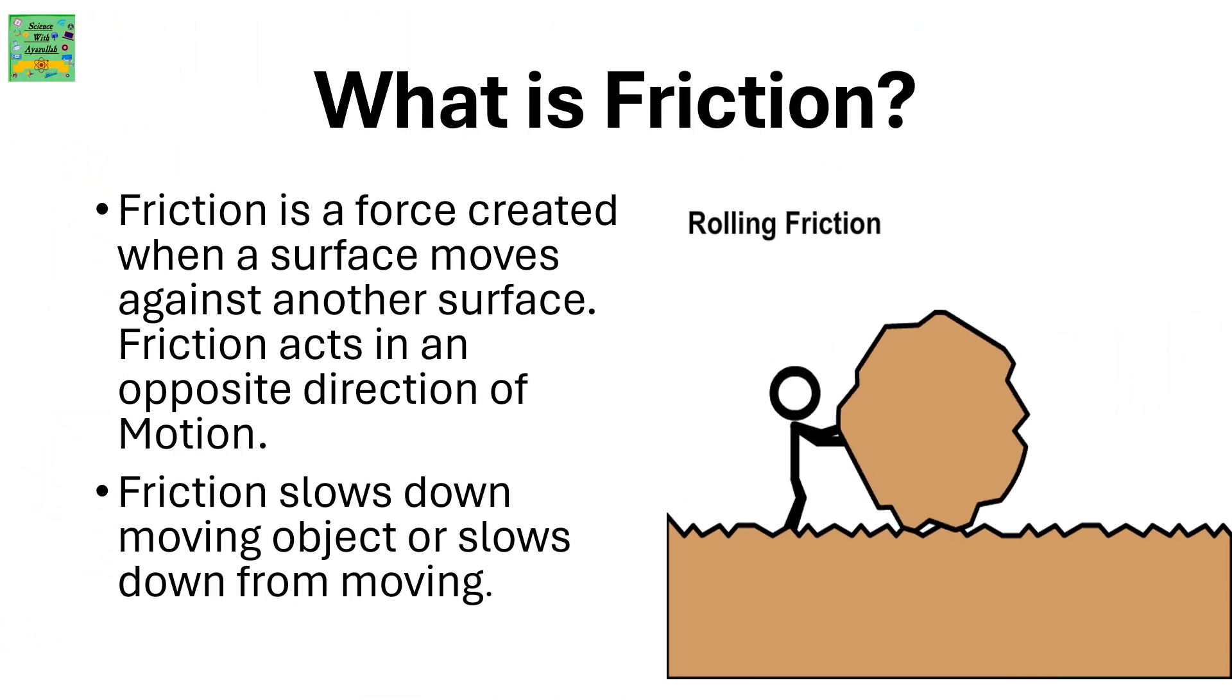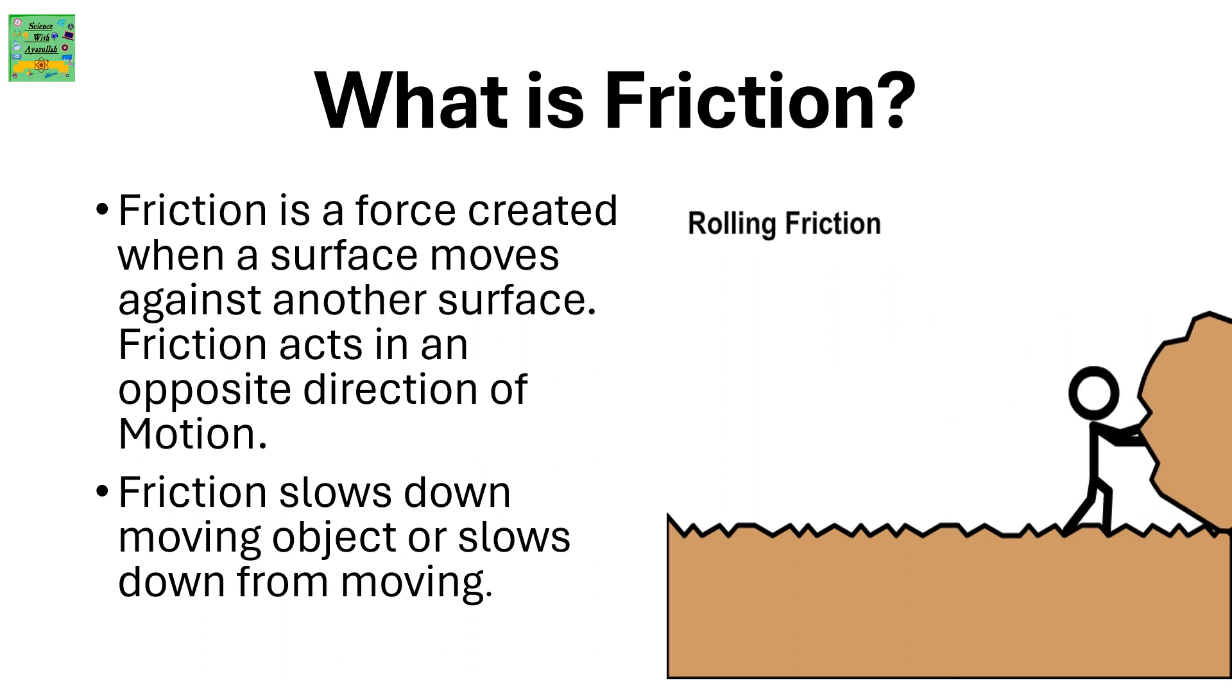What is friction? Friction is a force created when a surface moves against another surface. Friction acts in the opposite direction of motion. Friction slows down moving objects or prevents them from moving.